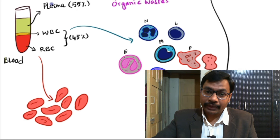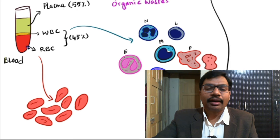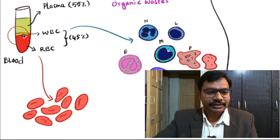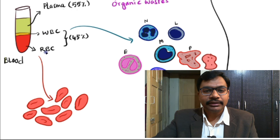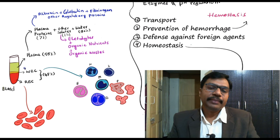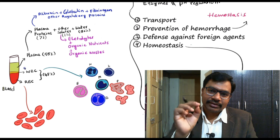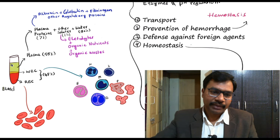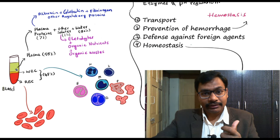The uppermost part is plasma, and the lowermost two layers are blood cells. The middle layer is WBCs — white blood cells — and the lowermost extreme red-colored layer is RBCs. The blood cells are formed elements, meaning cells with a definite shape, whereas plasma does not have any shape.